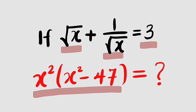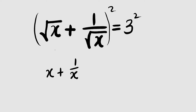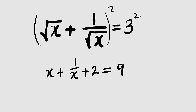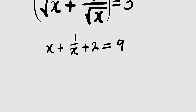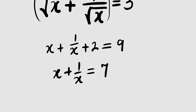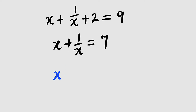First of all, I would like to square the first equation. I will square the left hand side and also square the right hand side. To the left hand side, we have the first term squared — that is square root of x squared, which gives us x — plus the second term squared, which is 1 divided by x. Then 2 multiplied by the first term multiplied by the second term equals 2, since square root of x divided by square root of x equals 1. And to the right hand side, we have 3 squared equal to 9.